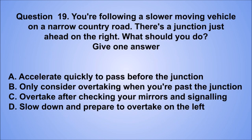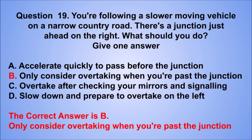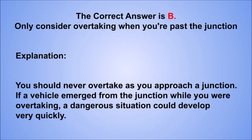Question 19. You're following a slower moving vehicle on a narrow country road. There's a junction just ahead on the right. What should you do? Give one answer. A. Accelerate quickly to pass before the junction. B. Only consider overtaking when you're past the junction. C. Overtake after checking your mirrors and signaling. D. Slow down and prepare to overtake on the left. The correct answer is B, only consider overtaking when you're past the junction. You should never overtake as you approach a junction. If a vehicle emerged from the junction while you were overtaking, a dangerous situation could develop very quickly.